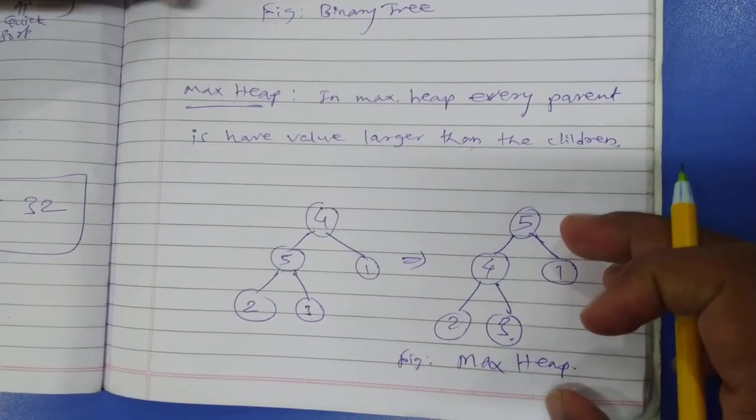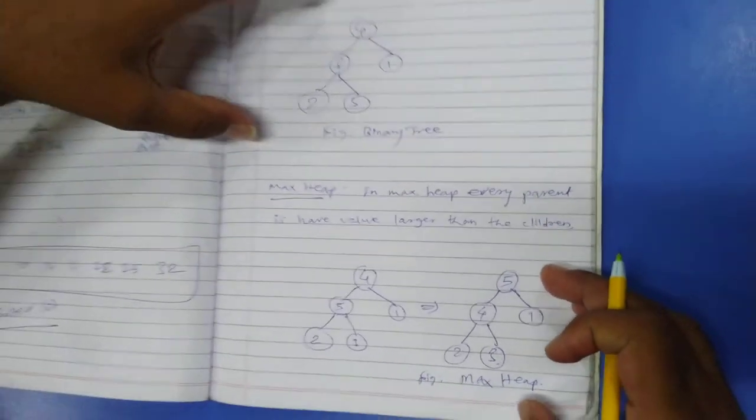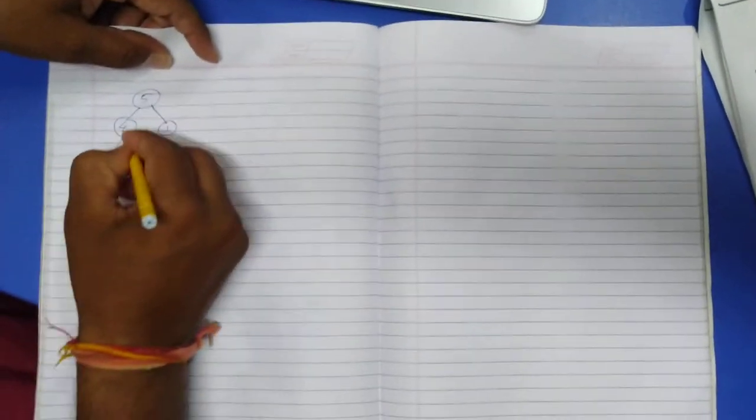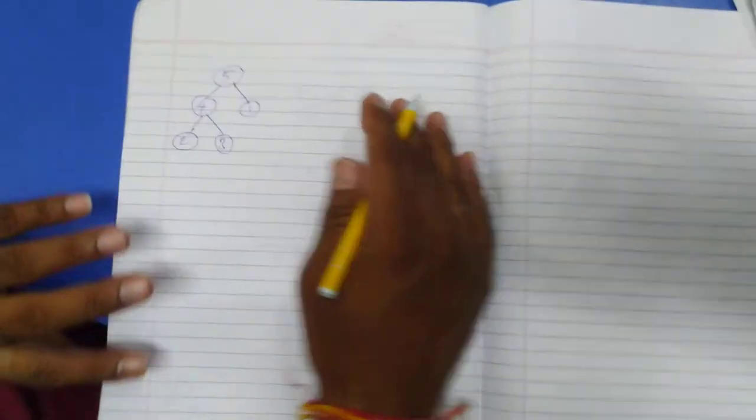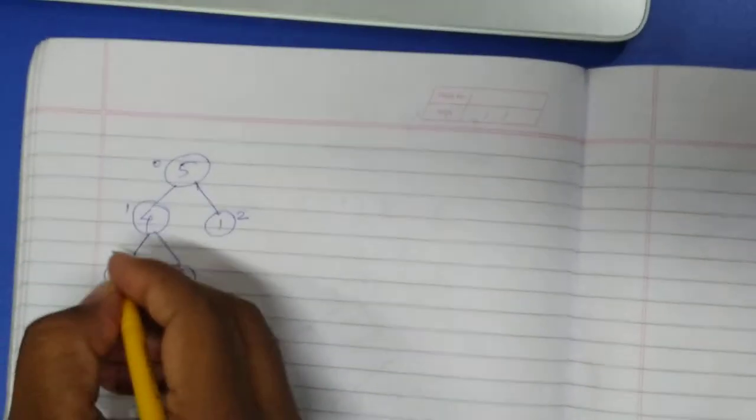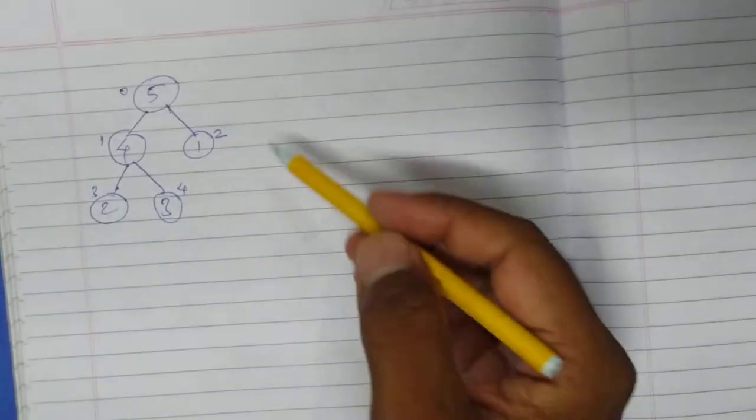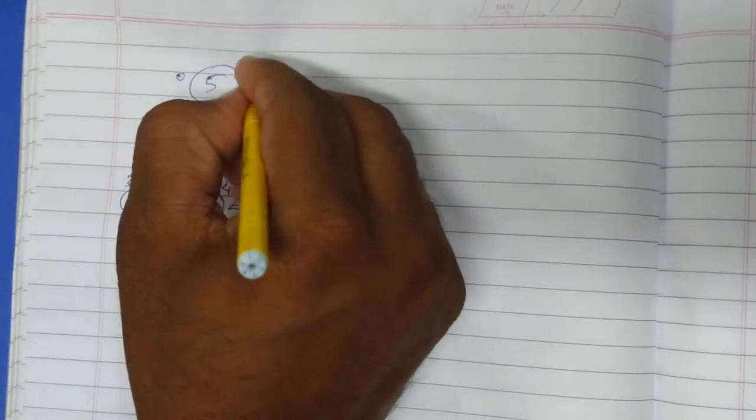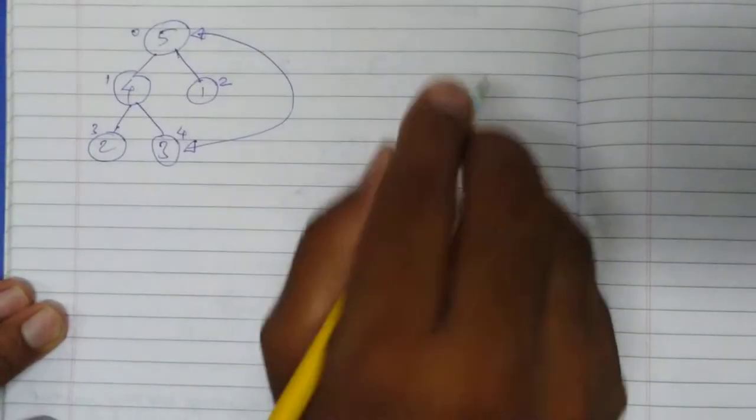So we achieved MaxHeap from the given binary tree. Once you get the MaxHeap, the next step is to give the indices to each and every node in the tree. Start giving the indices. The root node has index zero, next indices are one and two, then three and four. After giving the indices, always swap the root node with last unsorted element of the heap structure. All these are unsorted elements now.